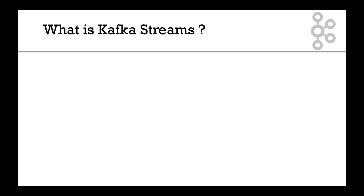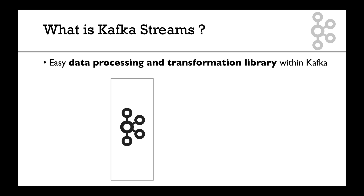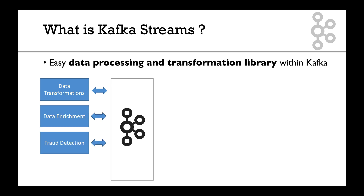So the first question is: what is Kafka streams? Kafka streams is an easy data processing and transformation library within Kafka. It ships with the Kafka binary — it's within the Kafka project, so it's not an external library created by a third party. You can create Kafka streams applications of any kind: it could be to transform data, enrich data, or perform fraud detection, monitoring, and alerting. Kafka streams is a library that sits on top of Kafka and that you build your application on.